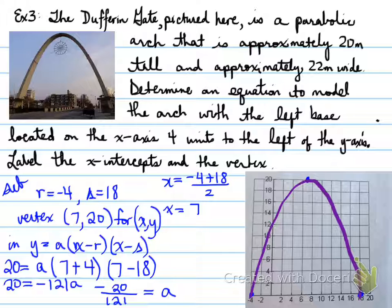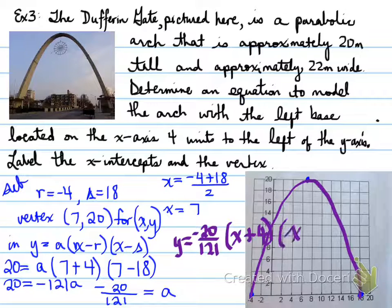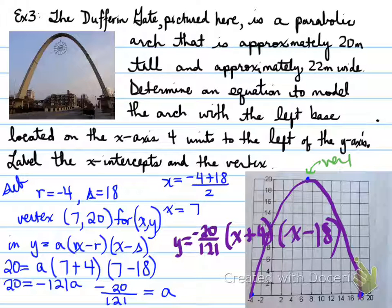So our final equation for this problem is going to be y equals negative 20 over 121 times x plus 4 times x minus 18. Our vertex is located right here. Label x-intercepts, and these are our roots right here. So we have all the values that we need on our graph.